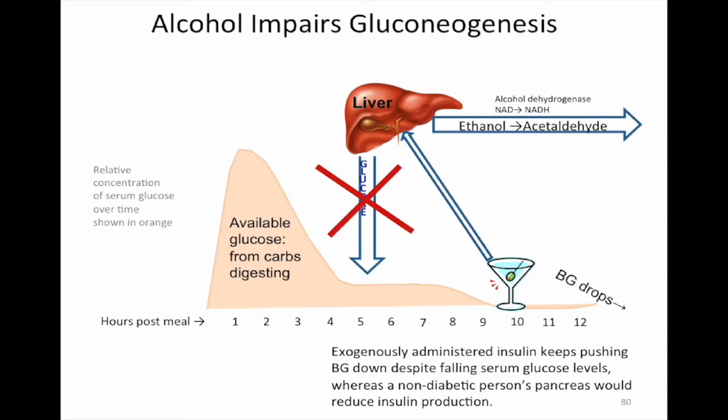So exogenously administered insulin will continue to push blood glucose down despite falling serum glucose levels. You can't take that insulin out once it's in. Now, if you had a person who did not have diabetes, whose pancreas was making the right amount of insulin, that pancreas would turn on production and off production as needed in very distinct short little bursts. And the person would not get a low blood glucose.